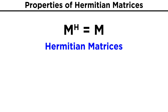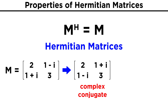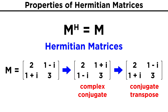Now that we understand the conjugate transpose, let's look at a special type of matrix called Hermitian matrices. These are square matrices whose conjugate transpose is the same as the original matrix. For example, consider the matrix: two, one minus I, one plus I, three. Taking the conjugate first, we get two, one plus I, one minus I, three. Now taking the transpose, we end up with two, one minus I, one plus I, three — which is precisely the matrix we started with, meaning this matrix is Hermitian.